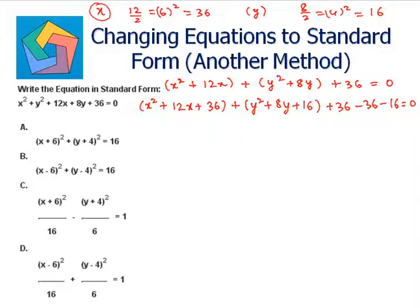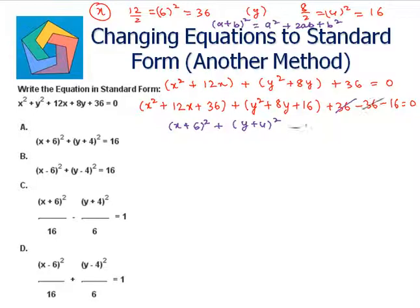So now this becomes the (a + b) whole square formula. (a + b)² is given by a² plus 2ab plus b². So this is (x + 6)² plus (y + 4)² minus 16 equals 0, which implies we can add 16 to both sides to get (x + 6)² plus (y + 4)² equals 16. This is the equation for a circle, which is the answer to part a.